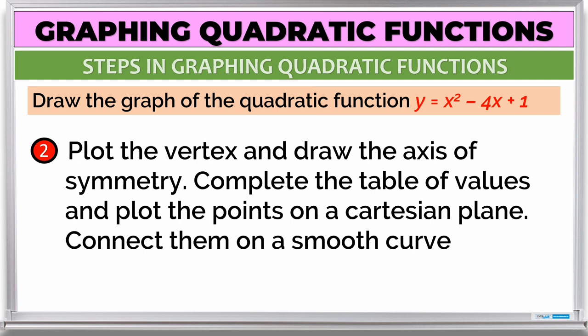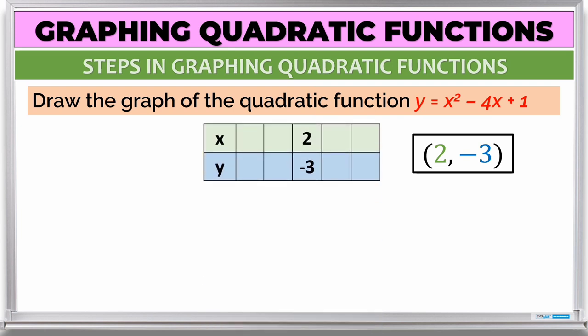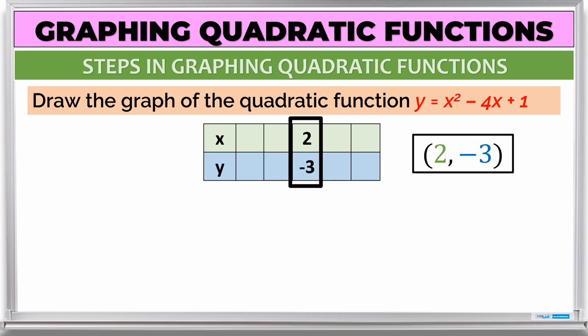Plot the vertex and draw the axis of symmetry. Then complete the table of values and plot the points on a Cartesian plane. Our vertex (2, -3) goes into the table. We choose x-values near the vertex: 0, 1, 2, 3, 4 — the numbers adjacent to 2 on the number line.